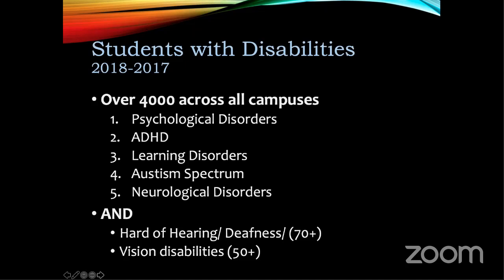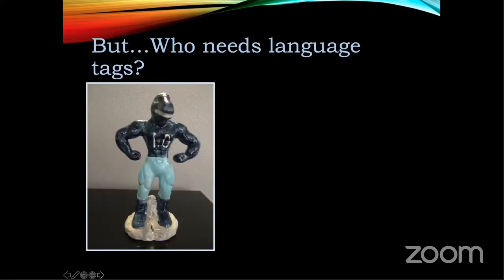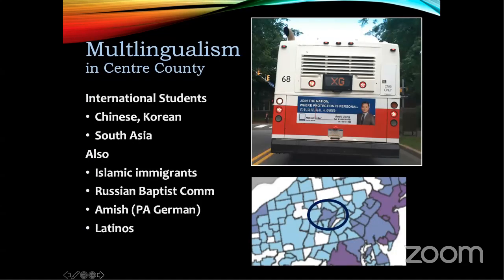I want to emphasize that although a lot of my presentation will be focusing on individuals with visual disabilities, there are actually a lot of people with learning and reading differences who use text-to-speech such as Kurzweil. A lot of these accommodations would apply to them too. We also have a fair number of people who are hard of hearing and have different visual disabilities. Because I'm in the middle of Pennsylvania, I'm often asked do we really need to worry about language tags — after all, we are Penn State, but not necessarily an international university.